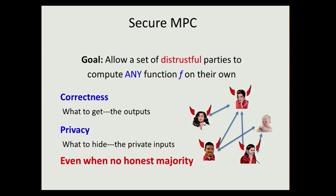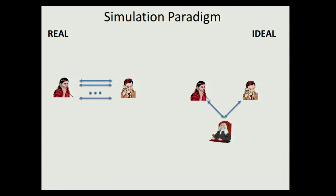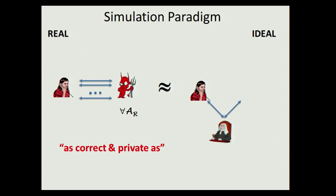We would like this to hold even when there's no honest majority in the protocol execution. These two intuitive requirements in the literature are formalized by the beautiful concept called the simulation paradigm, where we compare the real world — where players simply send messages to each other — with an ideal world where they get help from a trusted third party who simply computes the function for them. We would like to say the real world is as correct and private as the ideal world, meaning for every adversary in the real world launching some attack, there will be another adversary in the ideal world who can launch the same attack.